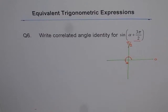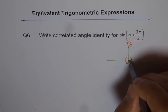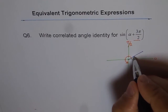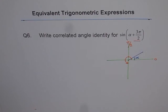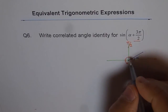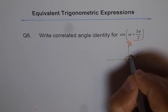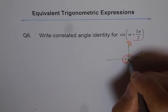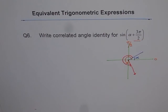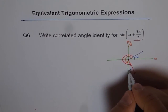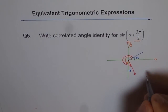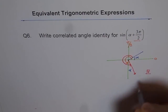Now, if I do alpha plus 3 pi by 2, that means I am starting from somewhere here, where this angle happens to be alpha. The meaning of alpha plus 3 pi by 2 is that we will be going alpha more. So we will be going like this, but we will land here, alpha more. So that becomes your alpha, and alpha plus 3 pi by 2 lands you into quadrant 4.